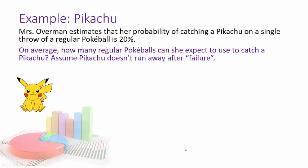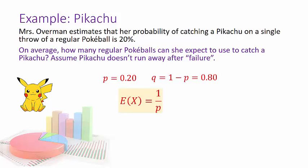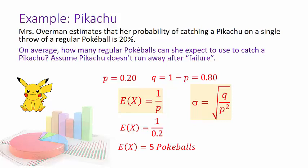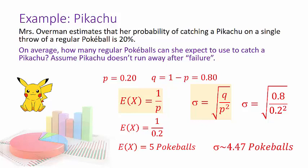I'm interested in the average number of Pokéballs needed to catch a Pikachu. The probability of success is still 0.2 and failure is 0.8. Using the formula, the expected value (mean) = 1/P = 1/0.2 = 5. So on average I'd expect to use five Pokéballs. The standard deviation is √(Q/P²) = √(0.8/0.04) ≈ 4.47 Pokéballs, which is quite high relative to the mean.